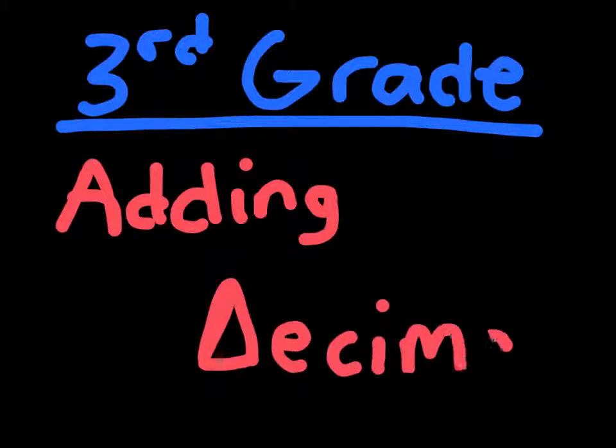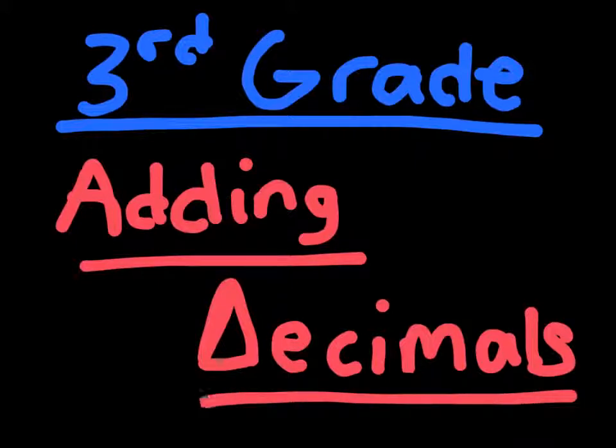Adding decimals. Well, this is really easy. This is a really easy topic. We know how to add regular numbers, so we can add decimals. The only difference is that we have a point, we have a dot in the middle of the number, and regular addition didn't. So, let's go through a few examples right away.